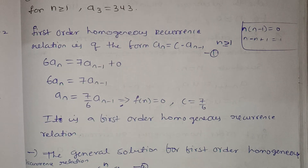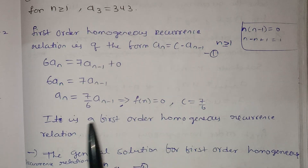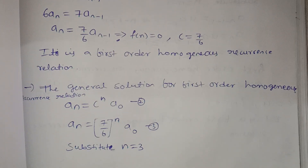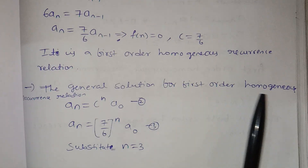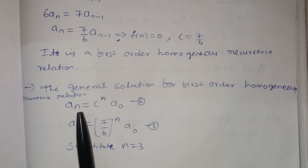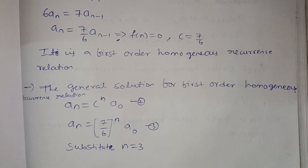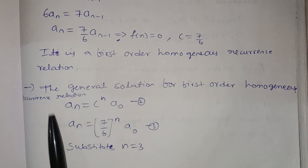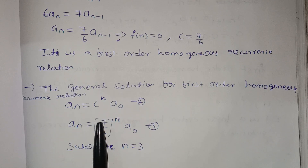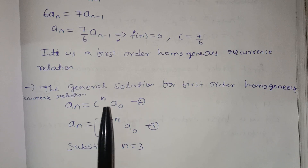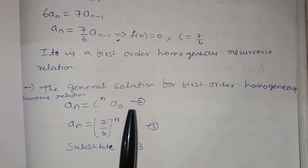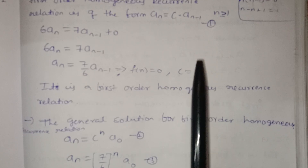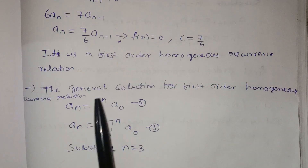Since it is a first-order homogeneous recurrence relation, the general solution is: aₙ = cⁿ · a₀. Now we substitute c = 7/6 into this formula.